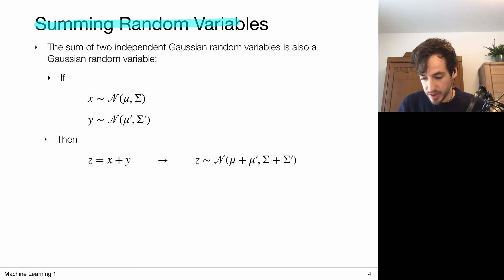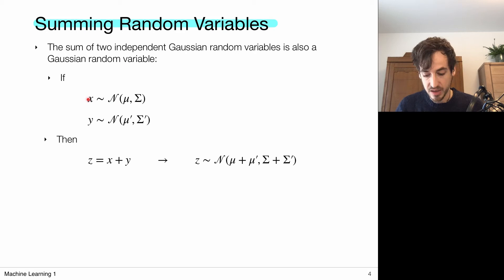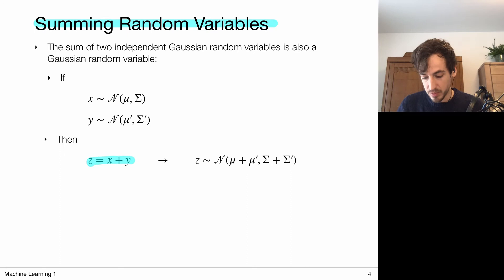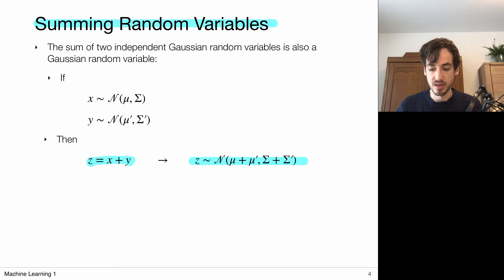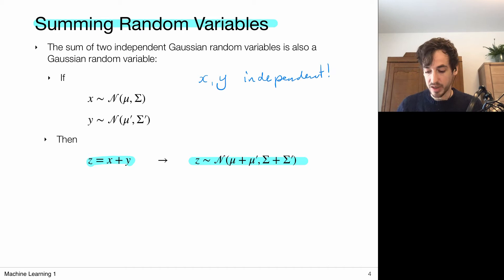Let's have a look at the summation of random variables — a convenient thing to remember. The statement is: the sum of two independent Gaussian random variables is also a Gaussian random variable. So if x is drawn from a Gaussian with mean mu and covariance sigma, and y is drawn from a Gaussian with mean mu prime and sigma prime, then the sum of these two random variables is itself drawn from a Gaussian in which the means are simply added and the covariance matrices are added. It's important to recall that x and y must be independent.